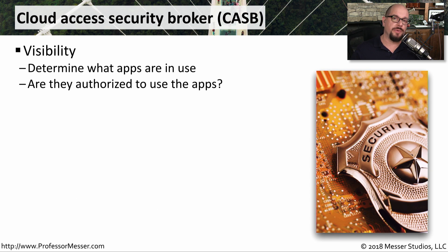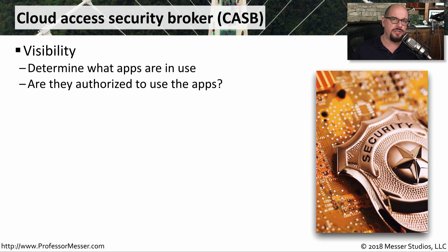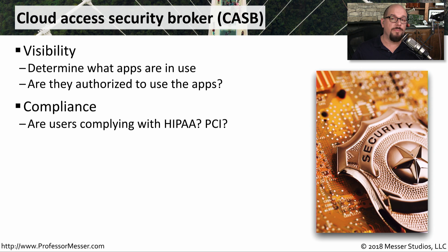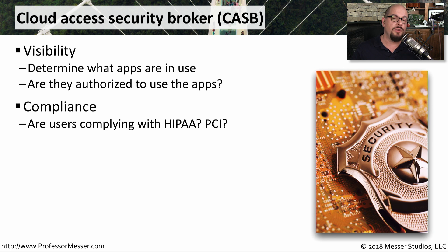There are four main characteristics of a CASB. The first would be visibility — you need to know exactly what applications people are using in the cloud, and you want to be sure that the right people have the right authority to use those applications. If you're working with medical information or credit card information, there are probably also significant compliance requirements. If you want to be sure your users are complying with HIPAA or PCI requirements, then you want to be sure you have the CASB in place.